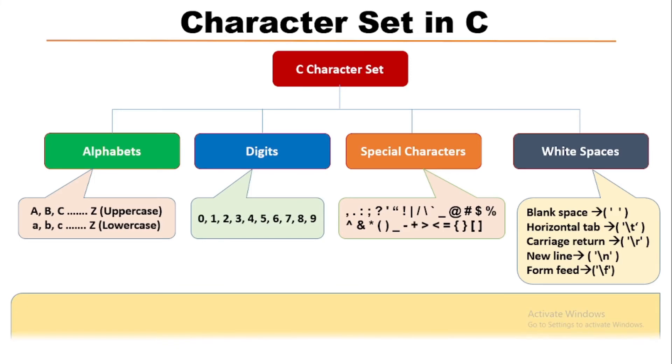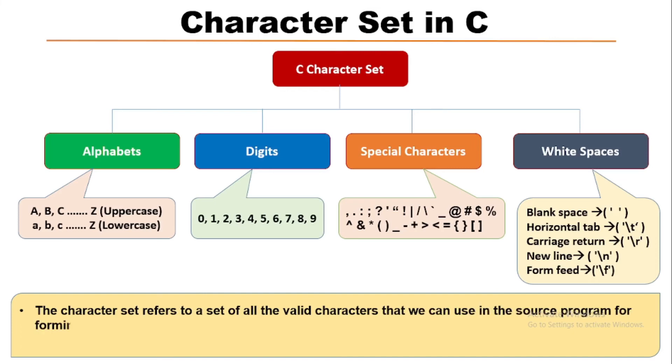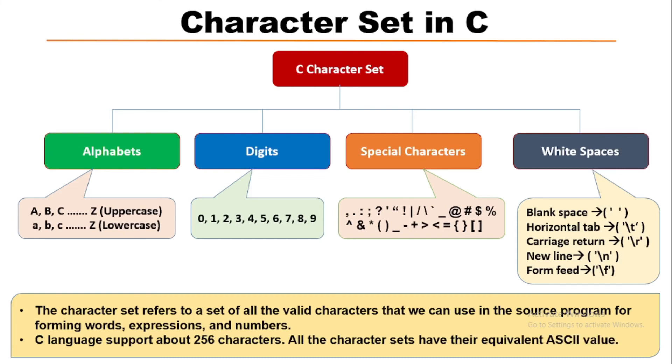So in C programming, the character set refers to a set of all valid characters that we can use in the source program for forming words, expressions, and numbers. C language supports a total of 256 characters and all these character sets have their equivalent ASCII values. So this is all about the character set in C language.